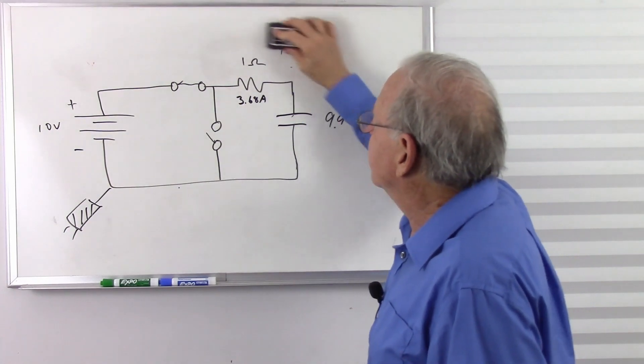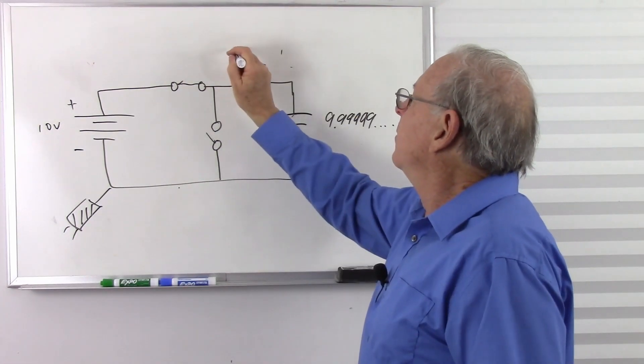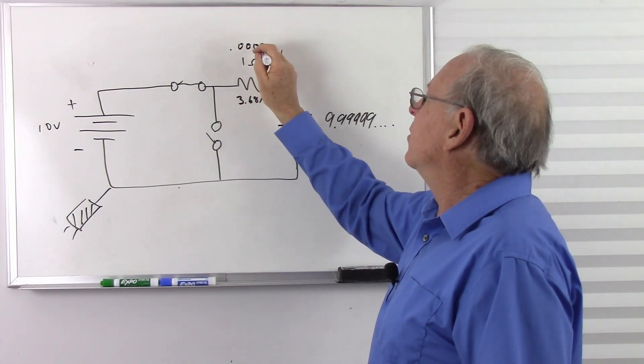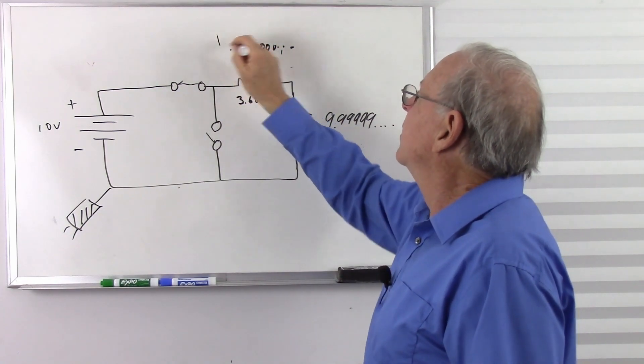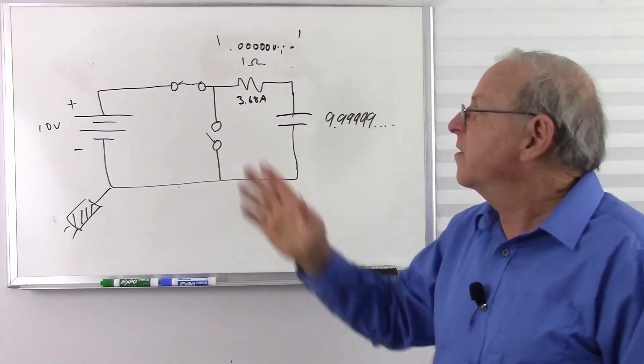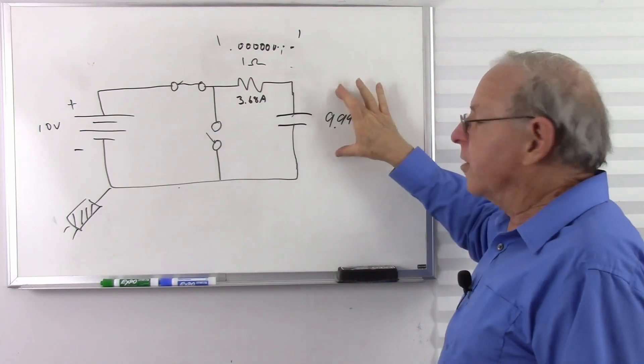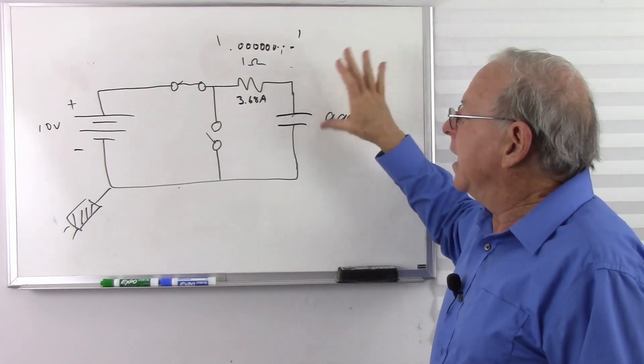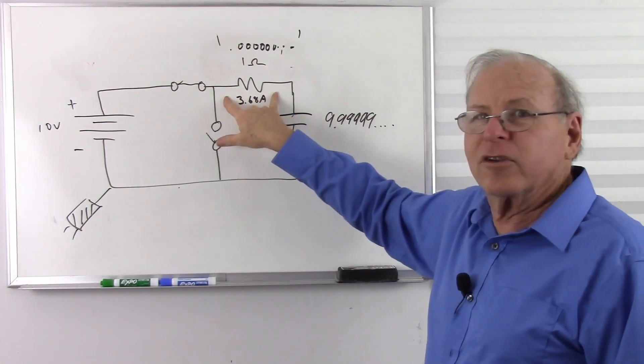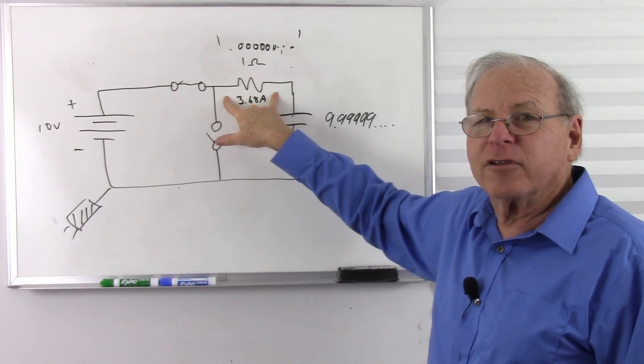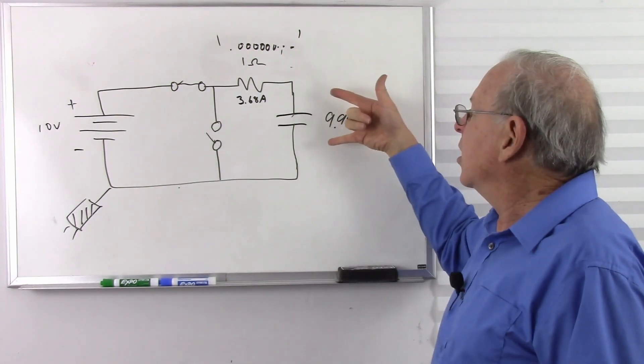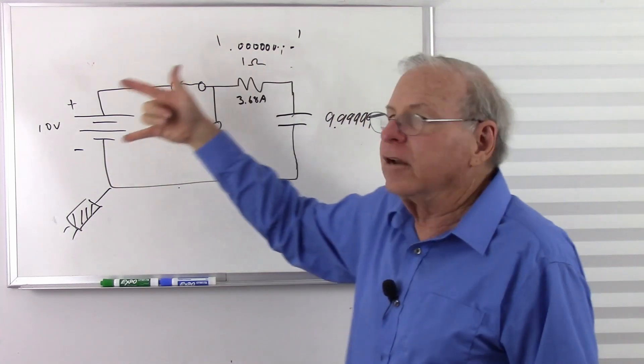But then how much is across my resistor here? 0.000000 whatever. So my voltage has become very tiny here and very big here. So in reality, there's always a tiny bit of voltage across this resistor and always a little less voltage than my 10 volts here.